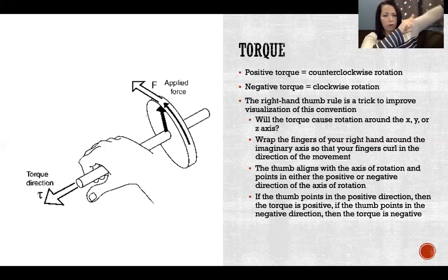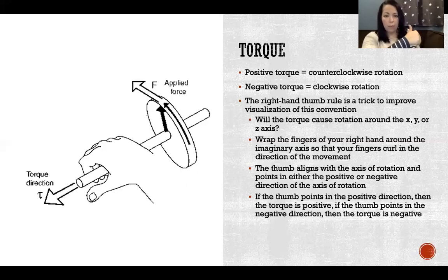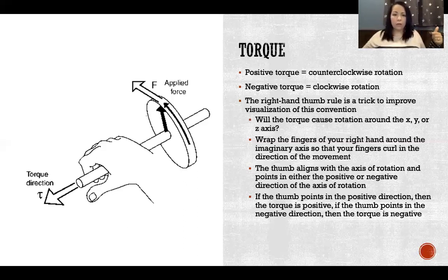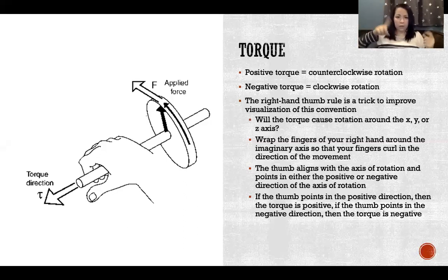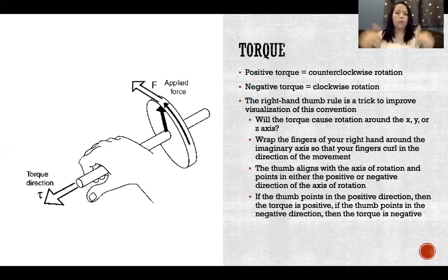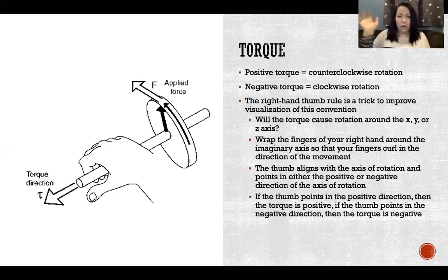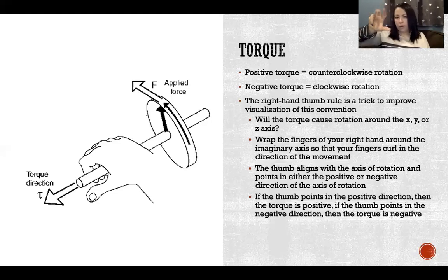If I were adducting, I'd curl my fingers in the direction of the movement going back down, still holding the anterior-posterior axis, but now my thumb points in the posterior direction — that's the negative direction of the Z axis. For the X axis, right is positive and left is negative. For the Y axis, superior is positive and inferior is negative. For the Z axis, anterior is positive and posterior is negative. Always use your right hand, because the left will give you opposite findings. Find the axis of rotation, wrap your fingers in the direction of rotation, and whichever way your thumb points is positive or negative.